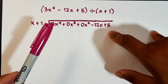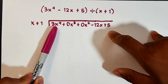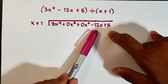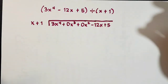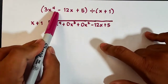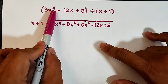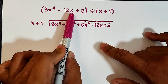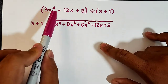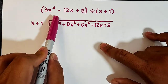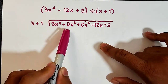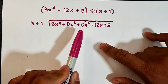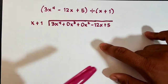Inside the division bracket, your dividend is 3x to the fourth power plus 0x cubed plus 0x squared minus 12x plus 5. Notice we started with the fourth degree going down to the linear term. Since we are missing the cubic and quadratic terms, you will put plus 0x cubed plus 0x squared — that is what you need to do.